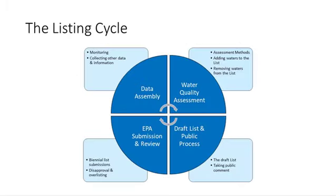The listing process — the impaired waters list process — operates on a two-year cycle, and at any given point a state should be somewhere within this cycle. You can think about the cycle as beginning with data assembly, which includes both water quality monitoring and collecting and aggregating that monitoring data, generated by the state but also reaching out to other entities that may possess such data. Once data has been assembled, states should apply their assessment methods to that data to compile a list of what waters are impaired. Once the state has compiled that list, they should submit it out to the public for public comment. Once they've taken public comment, they should consider those comments and any other data and information received to make changes to the list, and then submit the final list along with public comments, responses to comments, and other supporting information to EPA, which will review that submission and either approve or disapprove as appropriate.